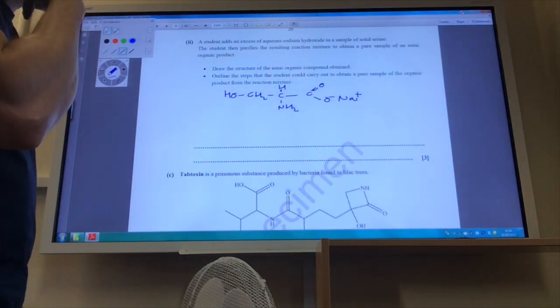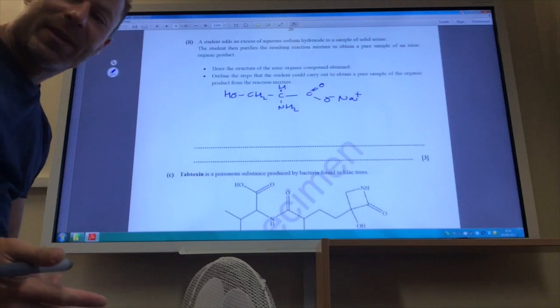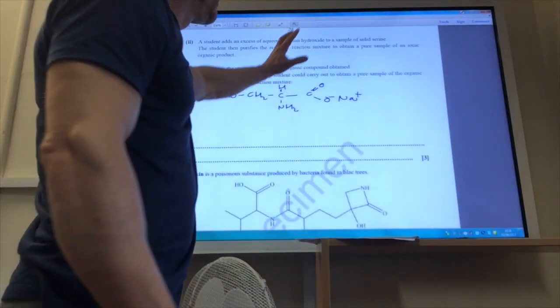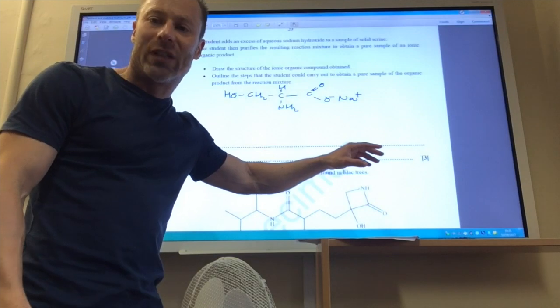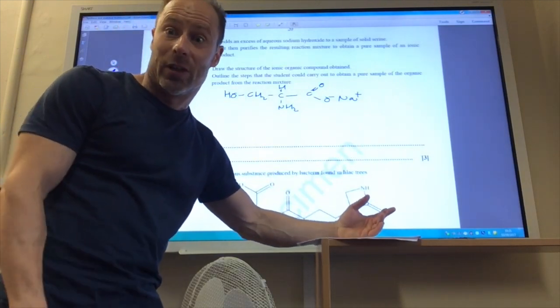It will be replaced with a minus charge and Na+. Outline the steps that the student could carry out to obtain a pure sample of this. Remember, this is now a solid sample, so we would filter this solid sample out and then we would recrystallize it, and that would ensure that we've got a nice pure sample.